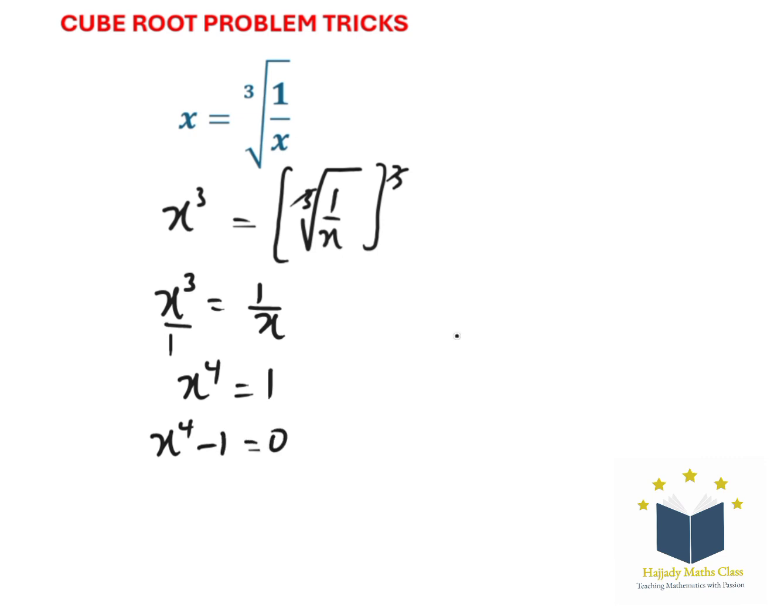So using the rule of difference of two squares, here I'm going to have x squared minus 1, x squared plus 1 equals to 0.